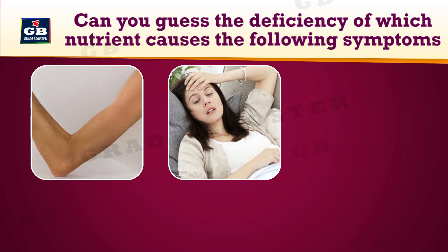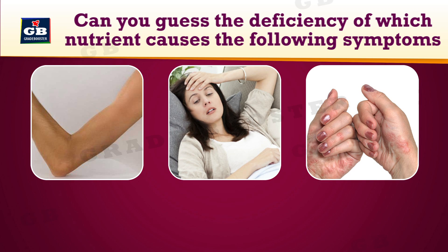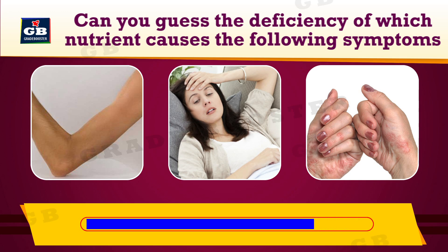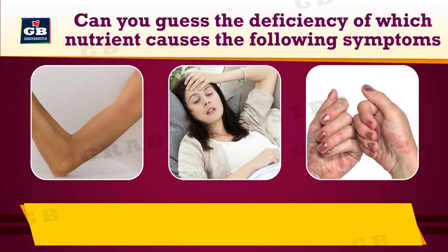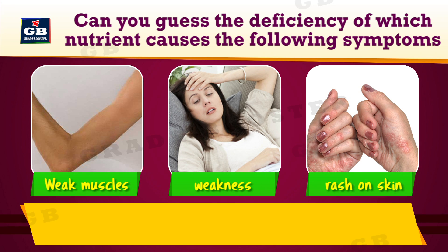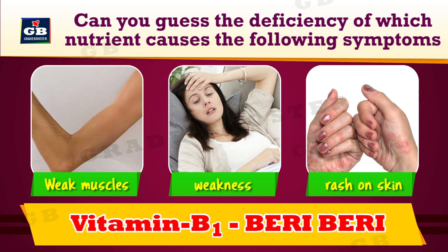Can you guess the deficiency of which nutrient causes the following symptoms? Didn't you get it? Okay, here are the clues: weak muscles, weakness, rash on skin. It is vitamin B1 or thiamine. Deficiency of vitamin B1 leads to a disease called beriberi.